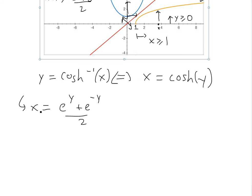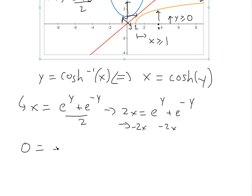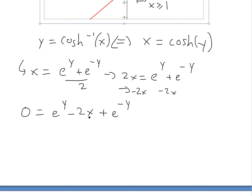We're now dealing with y as the variable. If we multiply both sides by 2, we get 2x equals e^y plus e^(-y). Now I'm going to rearrange this to look like a quadratic — as my calculus book does — by subtracting 2x from both sides to get 0 equals e^y minus 2x plus e^(-y).